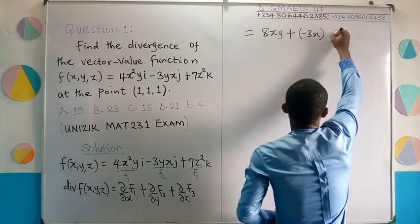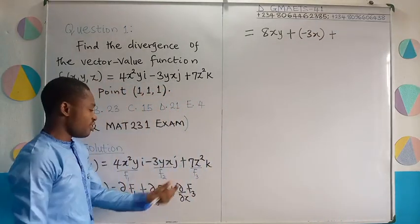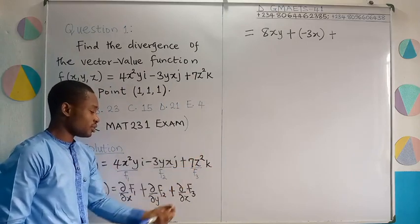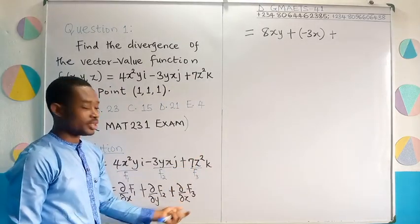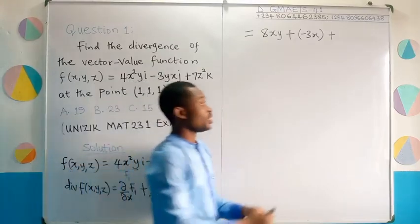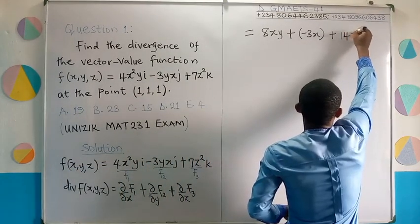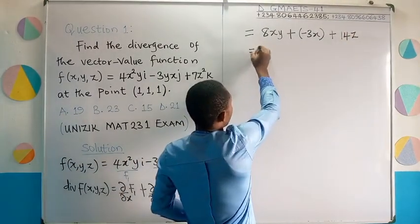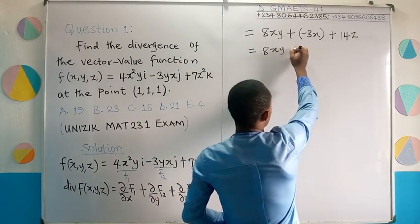And then plus, finally, I'll take the partial derivative of 7z² with respect to z. And that's going to give me 14z. This is the same as 8xy - 3x + 14z.